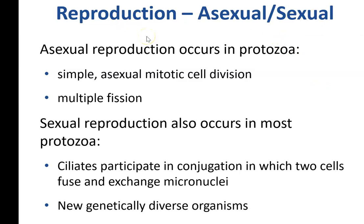Reproduction for protozoa can be asexual — the cell replicates and splits — or it can be sexual, where cells get together, exchange micronuclei which are kind of like plasmids, small pieces of DNA outside of the nucleus, and that helps to add to the genetic diversity of the microbes.